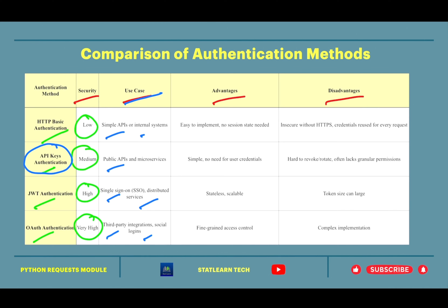Regarding advantages: HTTP Basic Authentication is very easy to implement and does not require sessions. API Key Authentication is also simple and does not require user credentials. JWT is stateless and scalable, suitable for larger applications. OAuth allows fine-grained access control — for example, providing different keys for accessing marketing, sales, and business data separately.